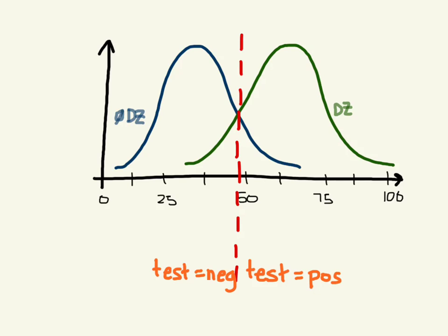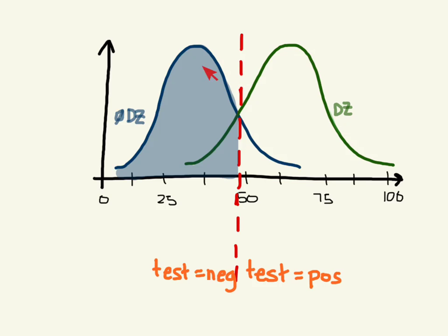With the threshold set at around 50, let's look at the green curve — the patients with disease. The area under this curve on the positive side of the line represents patients who have the disease and tested positive: these are our true positives. The patients who also have the disease but tested negative are our false negatives. Now looking at the other curve — the patients who don't have the disease — those who tested negative are our true negatives, and those who don't have the disease but tested positive are our false positives.